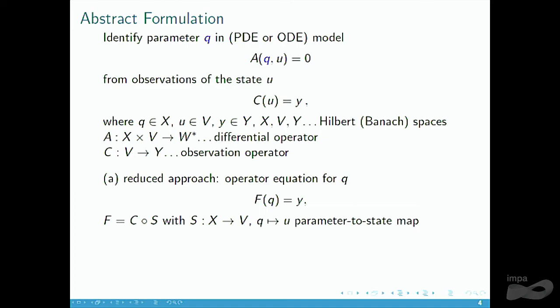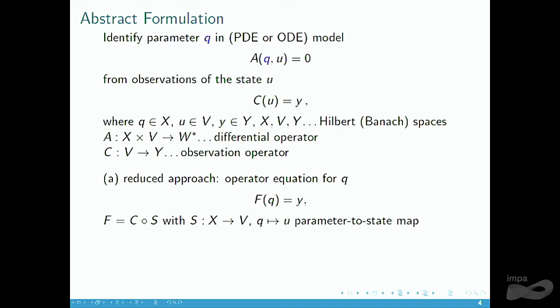The all-at-once formulation simply goes back to the original formulation and looks at it as a system in function spaces. This boldface F is a bit like the forward operator, just that it has two variables inside — namely the parameter and the state as well.